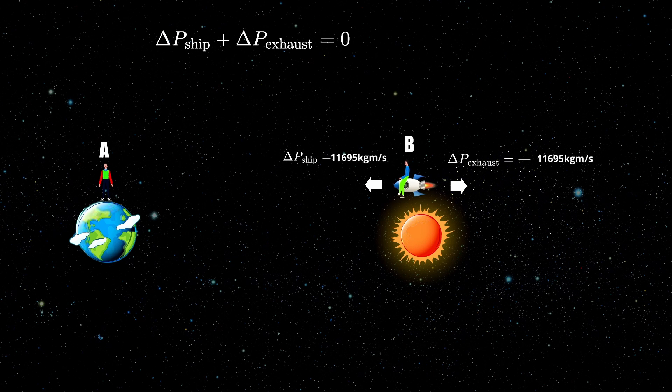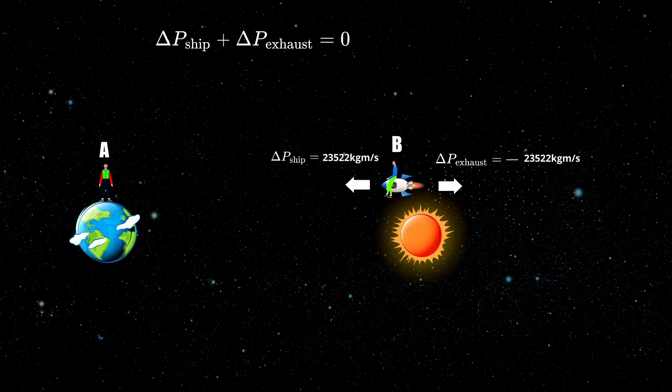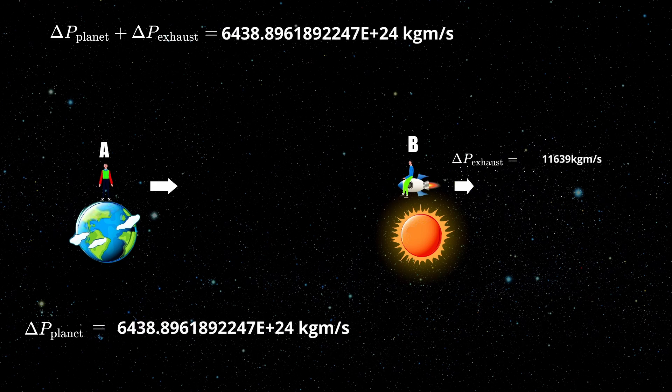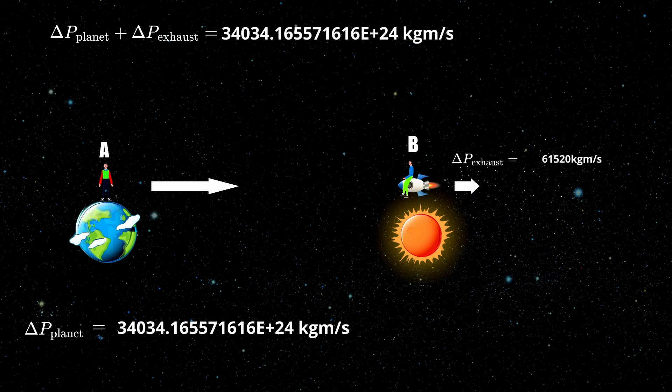Here is when most people start to argue about the relativity of acceleration — what gives us the right to claim that one observer was inertial the whole way and the other was not? Simply put, for every inertial observer momentum is always conserved. From observer A's frame, the momenta of the exhaust and the ship cancel out, leaving zero total change in momentum. Whereas for observer B, the A twin accelerates towards him without any reason, and the exhaust goes the same way, so the total momentum changed drastically. Therefore only one observer has the right to claim he was at rest the whole way, and the paradox is solved.